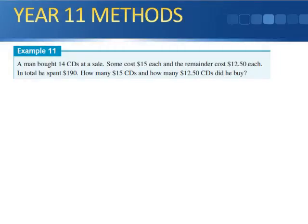Example 11. A man bought 14 CDs at a sale. Some cost $15 each and the remainder cost $12.50 each. In total he spent $190. How many $15 CDs and how many $12.50 CDs did he buy?